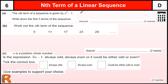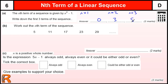So we make n equals 1 for the first term. When n is 1, we get 1 squared, which is 1, take away 1 is 0. The second term, we make n equals 2: 2 squared is 4, take away 1 is 3. And when n is 3 for the third term, we get 3 squared, which is 9, take away 1 is 8.